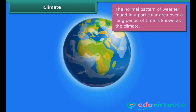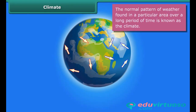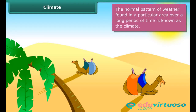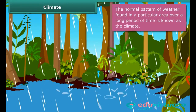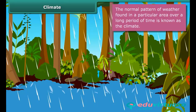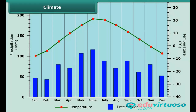Let us know how climate is different from weather. The average weather pattern taken over a long time, say 25 years, is called the climate of the place. If the temperature at a place is high most of the time, it is said to have a hot climate. If it also has heavy rainfall in addition to high temperature, then we say that the climate of that place is hot and wet.